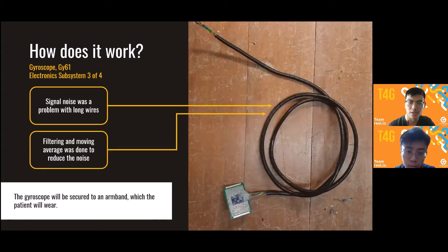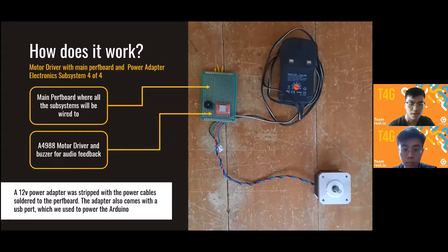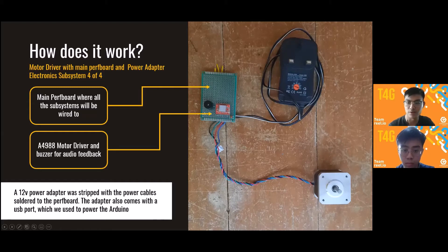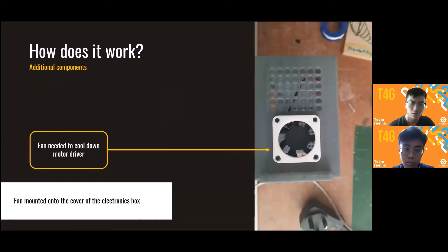For the gyroscope subsystem, one problem we faced was signal noise due to the long wires used. Therefore, filtering and a moving average were applied to remove this noise. The last but most important subsystem is the power and motor subsystem. Power comes from a 12-volt power adapter which powers the motor driver, buzzer, servo motor, and the rest of the components. Another problem was the motor driver overheating, which is why we used a fan.